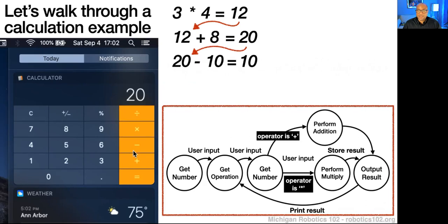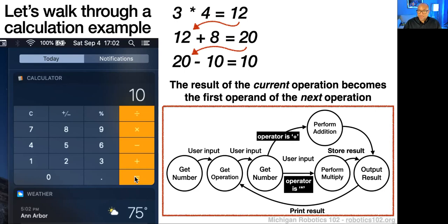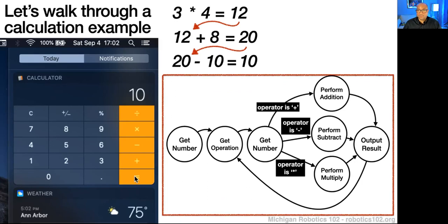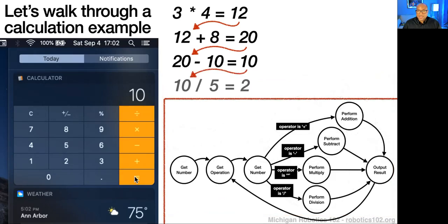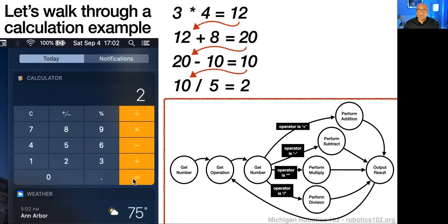Continuing on, we take the result and perform the next operation — a subtraction. We subtract 10 from 20 and get 10. In general, the result of the current operation will become the first operand for the next operation. We're looping over and over — this is the relationship between our iterations. We also performed a subtraction, giving us another branch in our finite state machine. Next, we take that 10 and divide by five to get two. We've now done all of our arithmetic operations. This is what our finite state machine carries out.